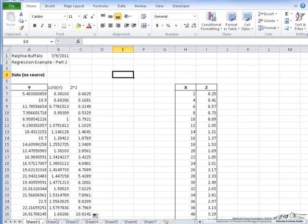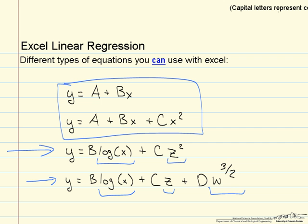So I'm going back to our problems. And here, we have y = B·log(x) + C·z + D·w^(3/2). I don't have a w column of data on my spreadsheet. But if I did, I would simply alter this the same as I did the ones previously to have instead of w, w to the three halves.